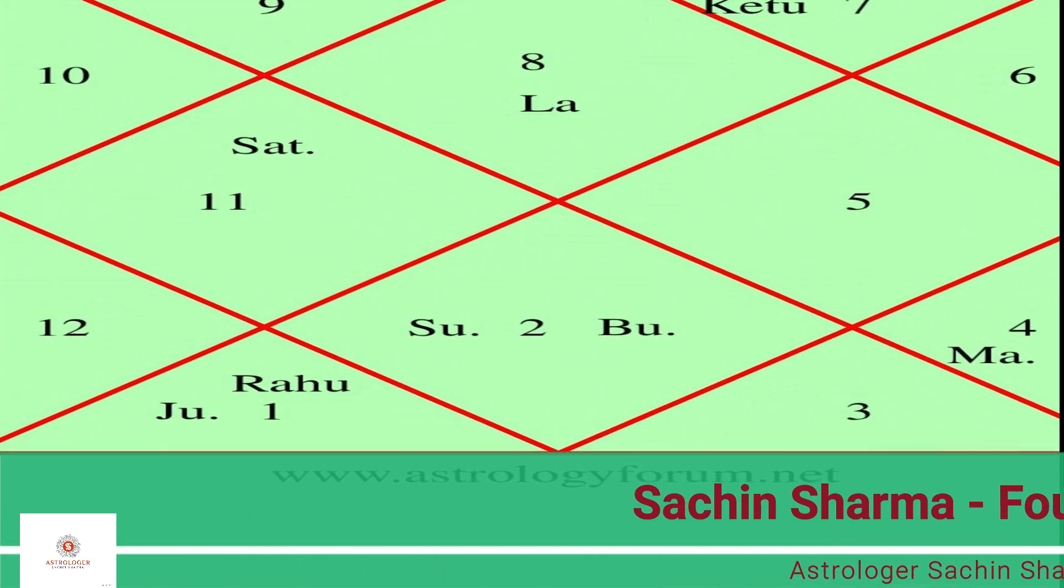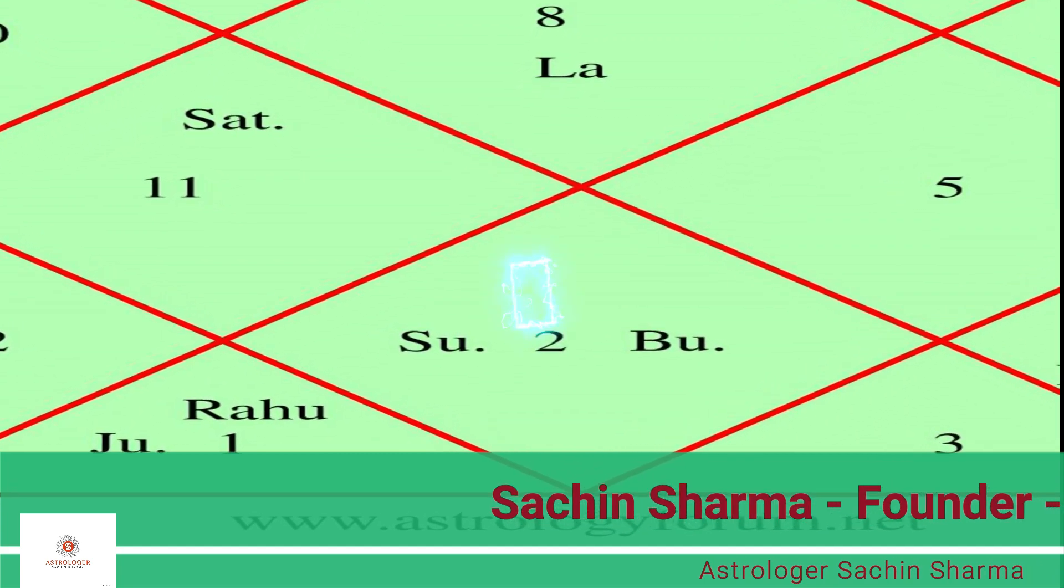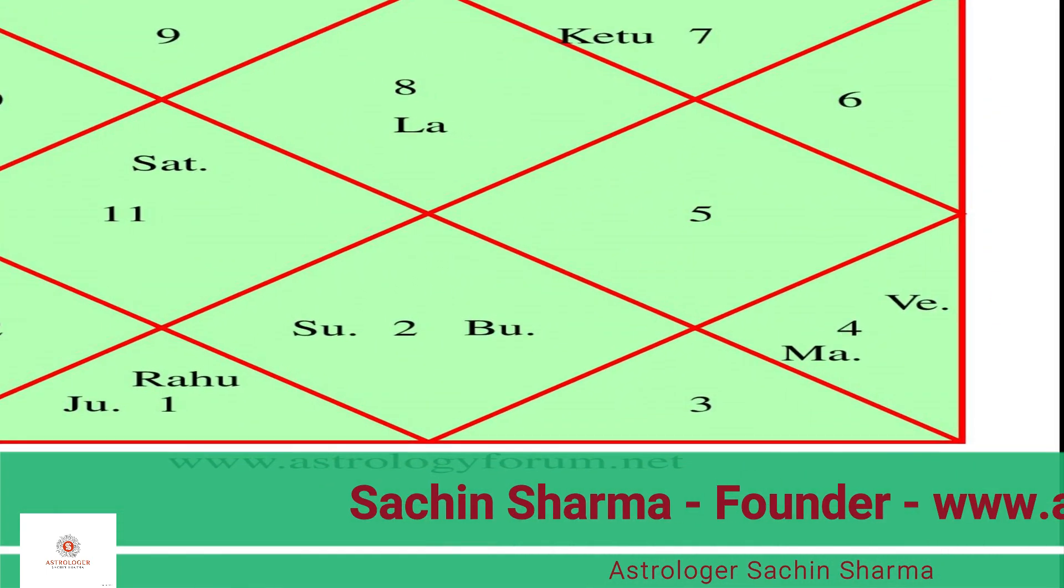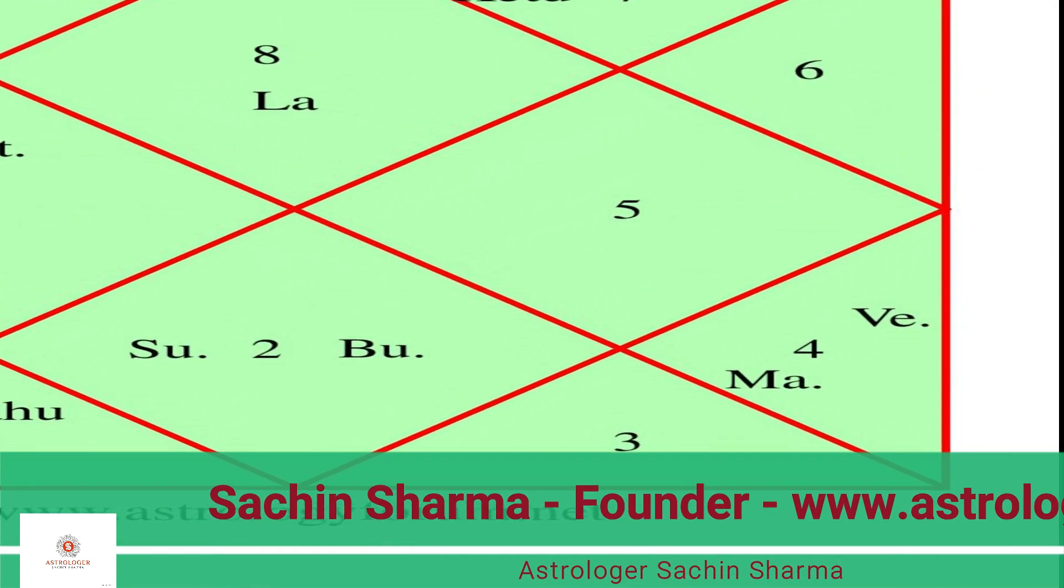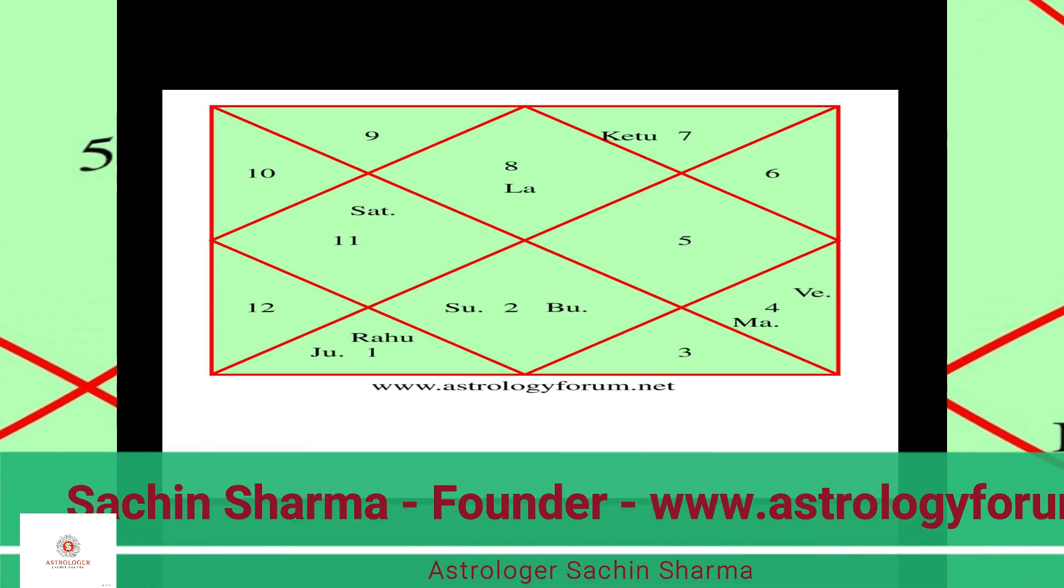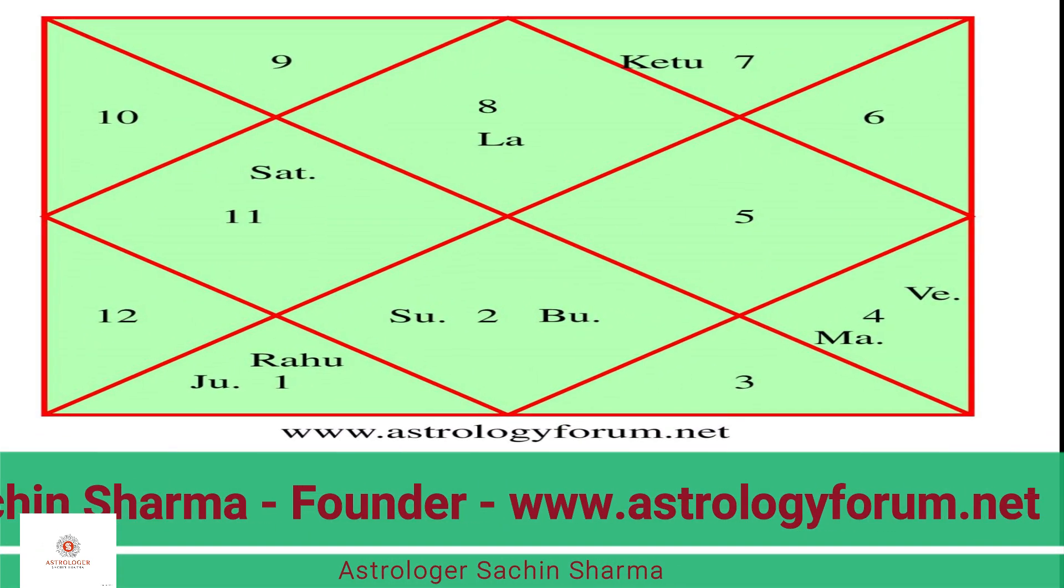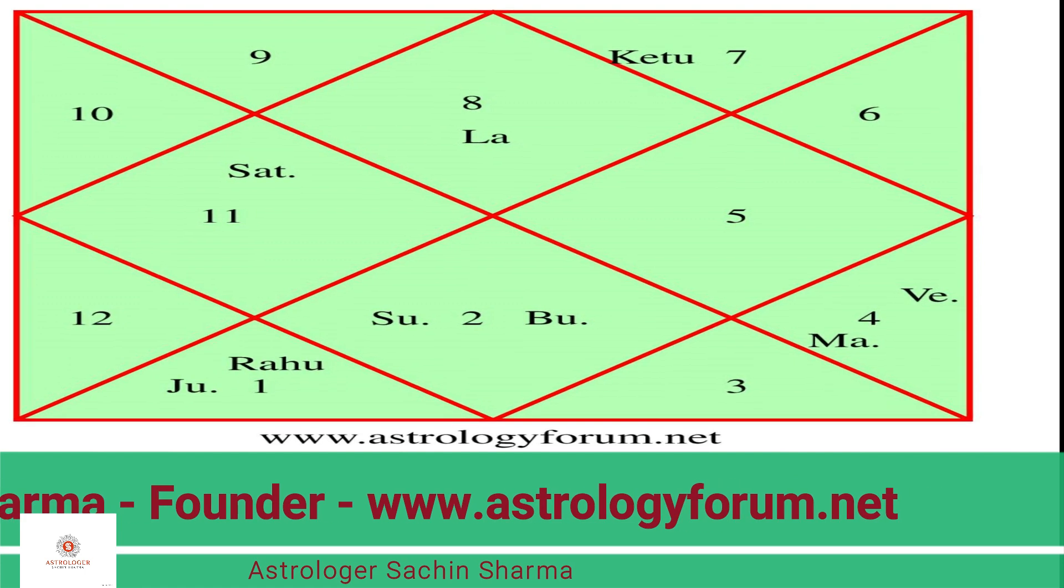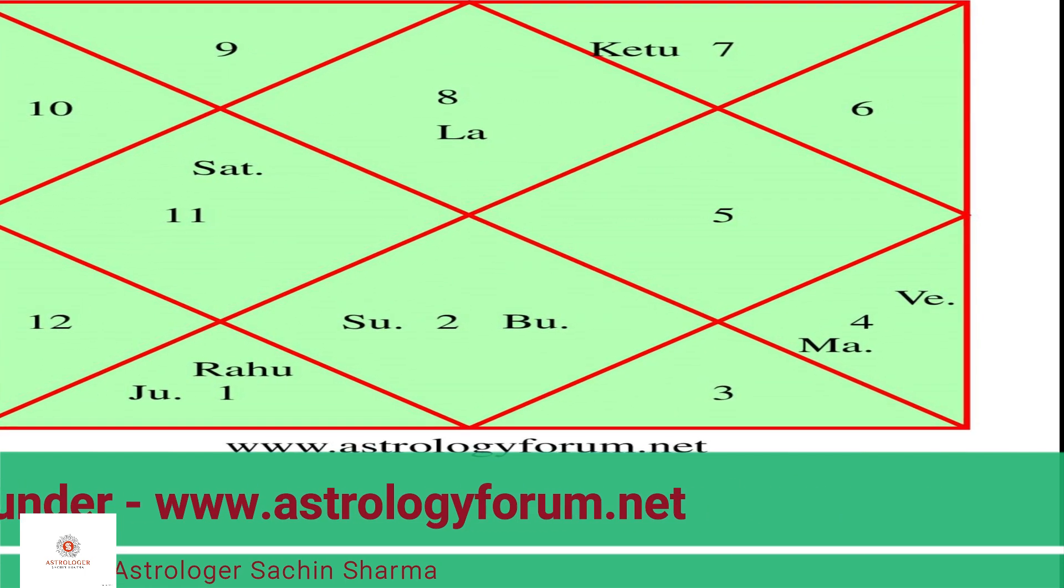During this period Venus and Mars are in the ninth house of your horoscope. At this time, the lord of the first house of your horoscope is in the ninth house which is the house of luck, meaning this period is very important related to your luck, due to which this time will give you some auspicious results.